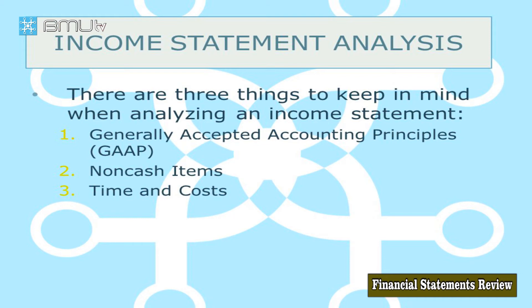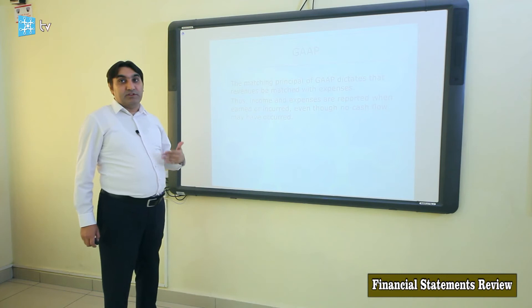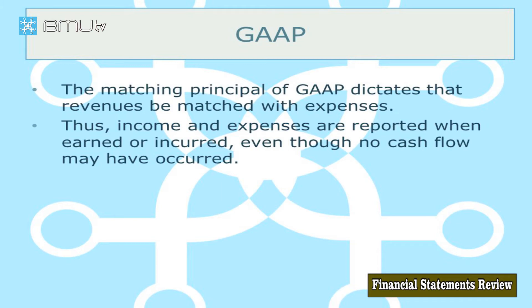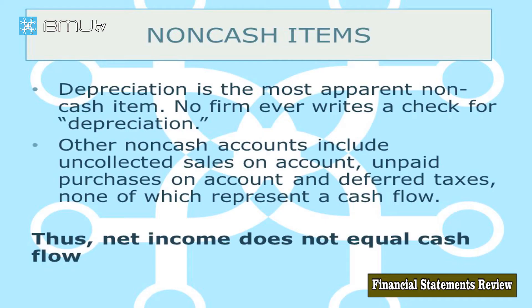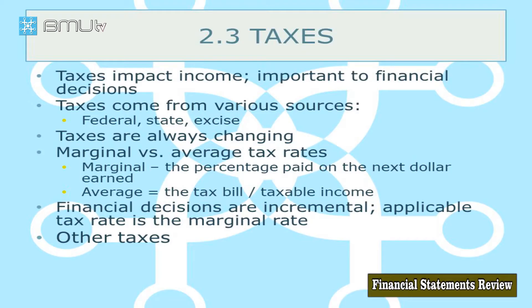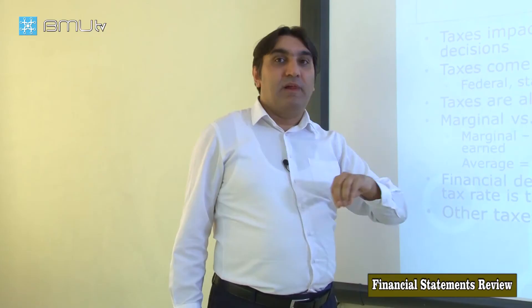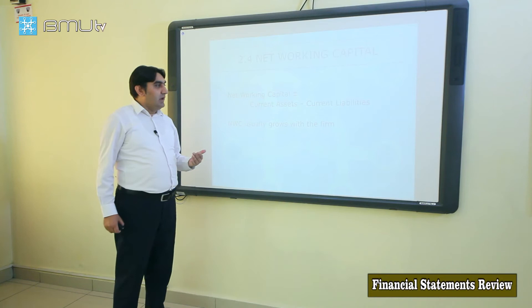When analyzing the income statement, we need to pay attention to three topics: what accounting standards are used, what non-cash items the company has, and timing and costs. Accounting standards are important because recording or reporting some items may change from standard to standard. The main non-cash item is depreciation, so we need to pay attention to how it affects net income. Taxes are also an important item in the income statement because they take out a big portion of the company's income, and the company has no return for this.